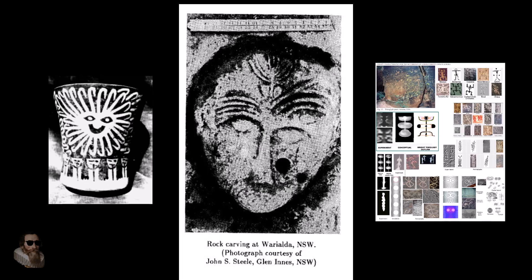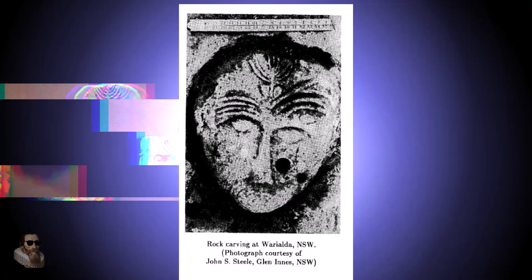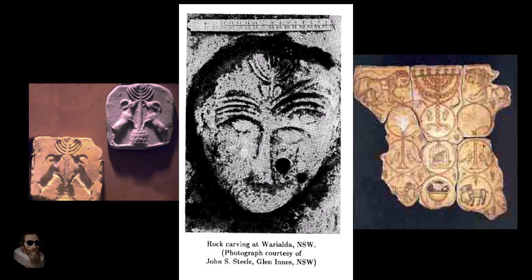One of the most important details in this carving is where the anomalous structure appears: on the head. Across global rock art traditions — from Australia to the American Southwest, from Scandinavia to Siberia — the head is consistently used as a stand-in for the sky or the heavens. This is not symbolic coincidence. In ancient cosmology, the head is the celestial realm, the body is the terrestrial realm, and the spine or axis is the world pillar.